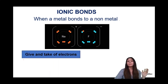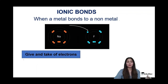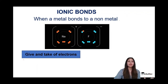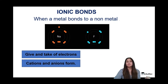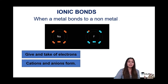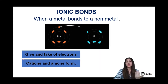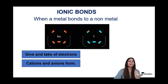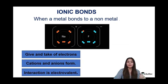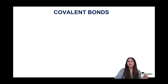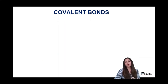In ionic bonds there is complete transfer of electrons — a total give and take. This is why we get cations and anions: the atom giving away its electron becomes a positive cation, and the one taking up the electron becomes a negative anion. This kind of bond is also called an electrovalent bond.